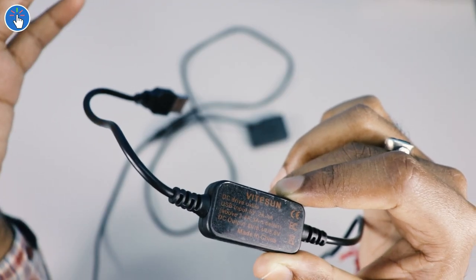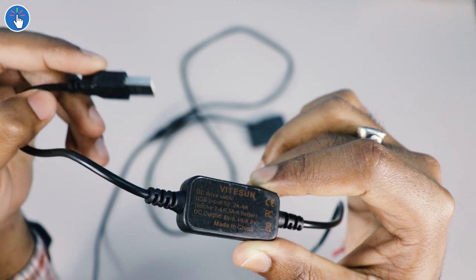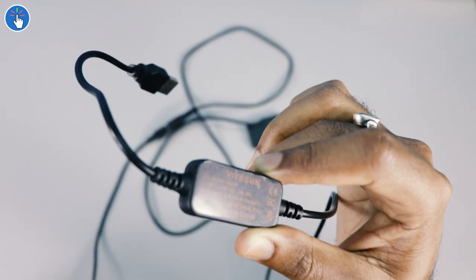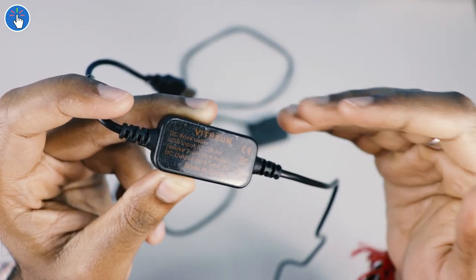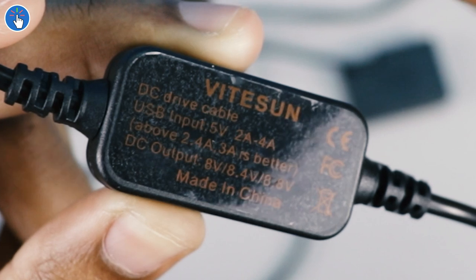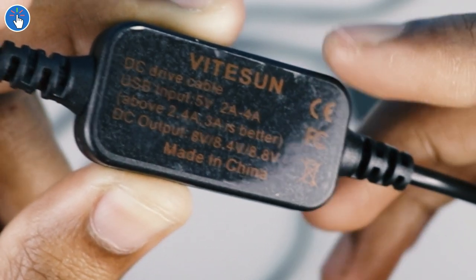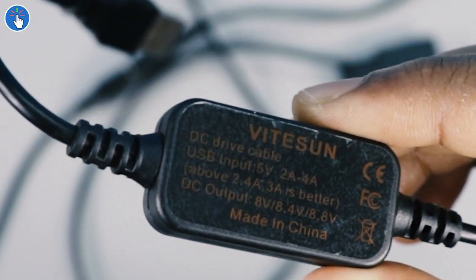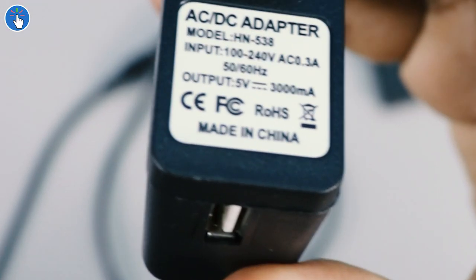Just make sure the USB adapter or the power bank to which you are connecting this USB jack can deliver at least 2 amps of current, and it is recommended that the power bank or the adapter should output at least 3 amps, but it will also work with 2 amps. And the included USB adapter can output 5 volts and 3000 milliamps - that means 3 amps.